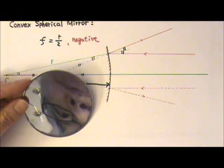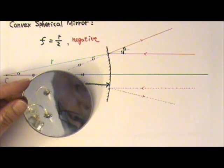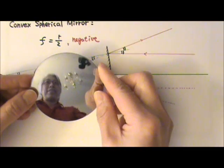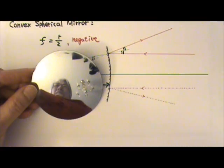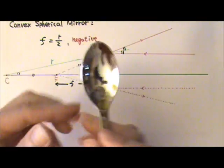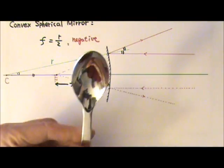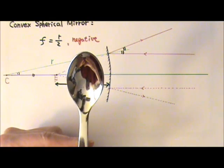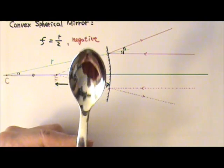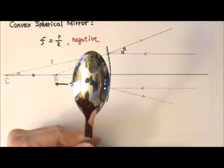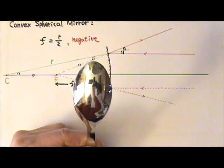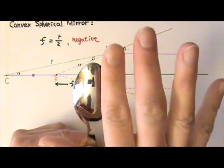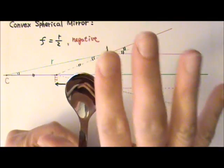In the next few lessons, we're going to study the images formed by concave and convex mirrors. You may wish to find a shiny spoon — one side will give you something similar to a concave mirror and the other side will be like a convex mirror. Take a look at the images formed and change the distances, because when you change the distance, you may see different types of images.